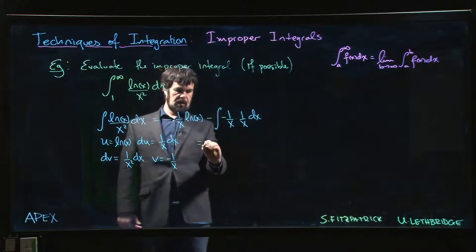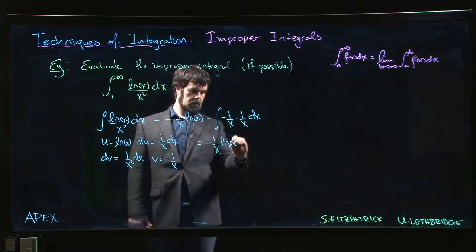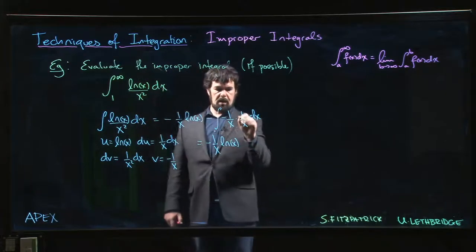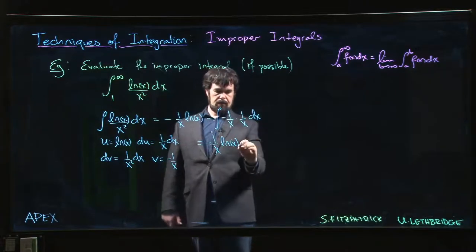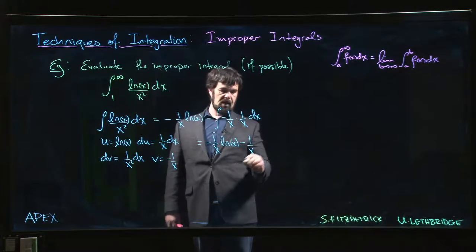So what we're going to get is minus 1 over x log x, and then, well, that's going to be plus, minus minus comes plus. That's 1 over x squared. We get minus 1 over x for the antiderivative of that.